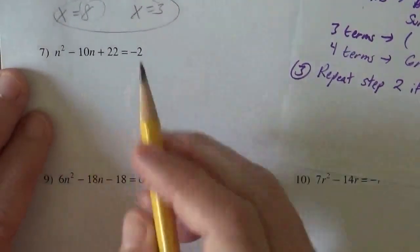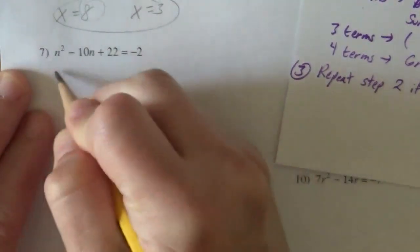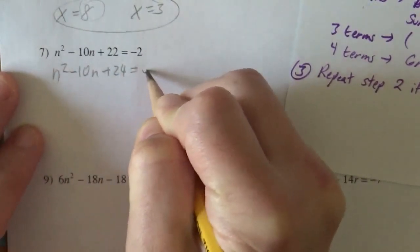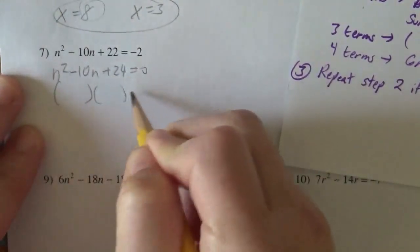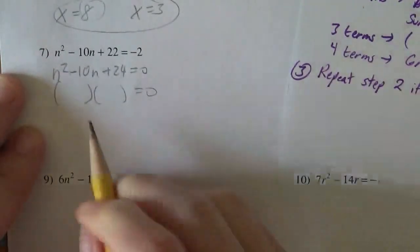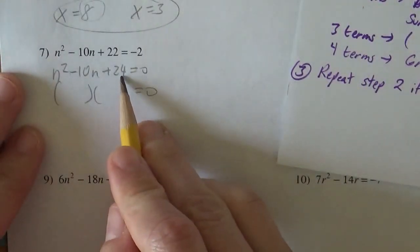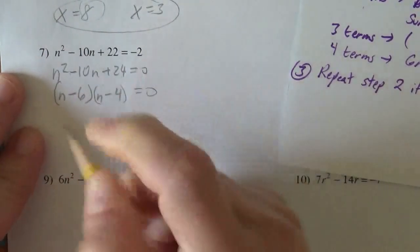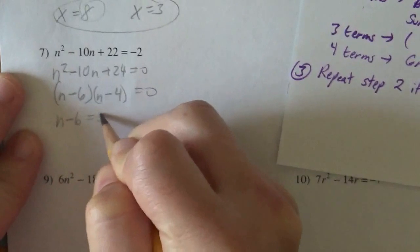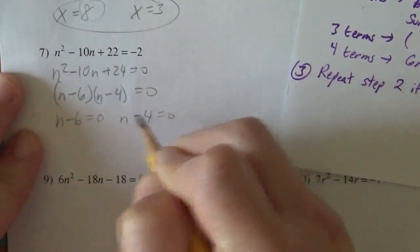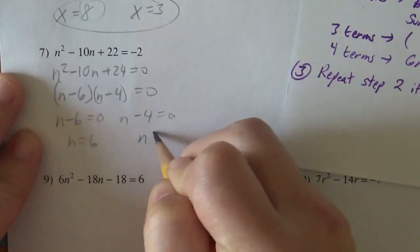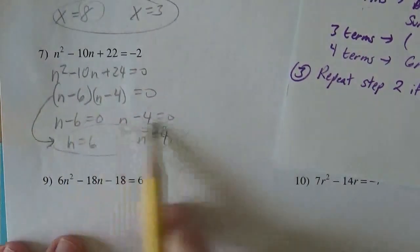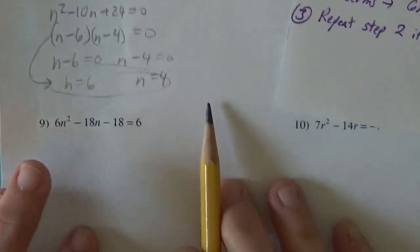This one here, again, we need it set equal to zero, so I'm going to scoot that two onto the other side. Add the two over plus twenty-four equals zero, and look for GCF first. There isn't any. Now I need to multiply to twenty-four and add to negative ten. So negative six and negative four. So n minus six equals zero, n minus four could equal zero, so n would be six or n would be four.